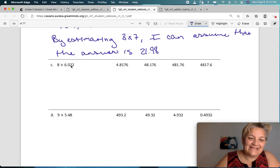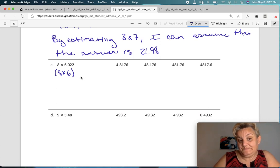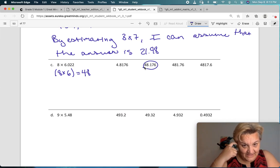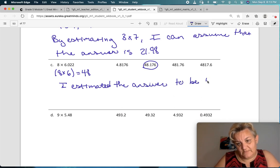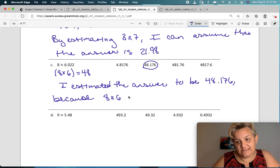Next one. 8 times 6.022. Well, let's just estimate 8 times 6, right? What is 8 times 6? 48, right? So, if we're going to estimate 8 times 6 is 48, it's not going to be 4.8176. It might be 48 here. It's not going to be 481.76 or 4,817.6. So, I'm going to estimate that this is the right answer. I estimated the answer to be 48.176 because 8 times 6 equals 48.